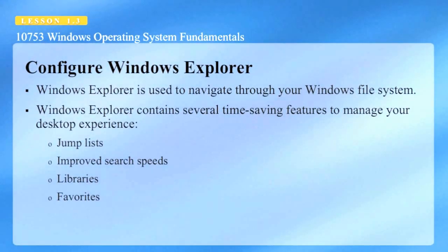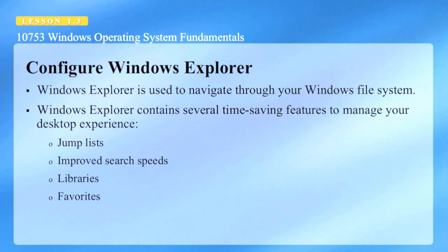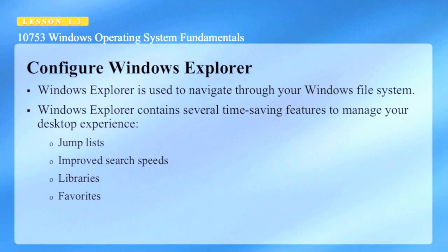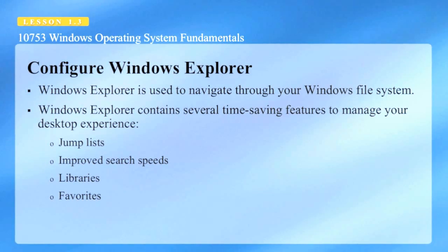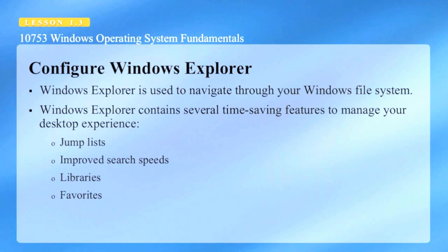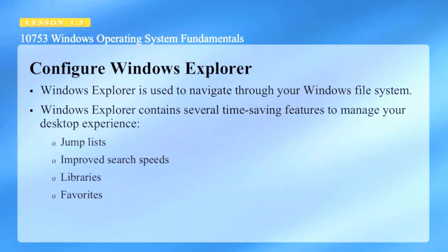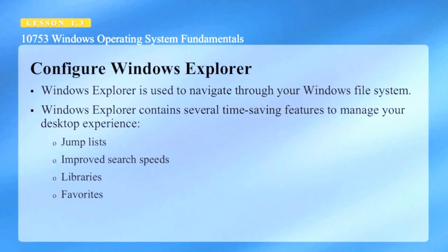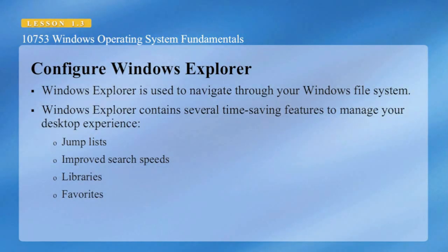Windows Explorer is used to navigate through your Windows file system and contains several time-saving features. JumpList is a list of frequently accessed files, folders, and applications which can be pinned to a jump list. Windows Search can index drives for quicker search results. Libraries can filter volumes based on file types such as media, documents, or custom filters. Folders can also be dragged to the Favorites list for quicker access.